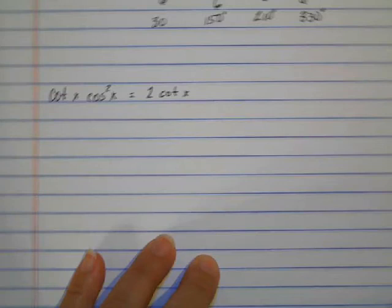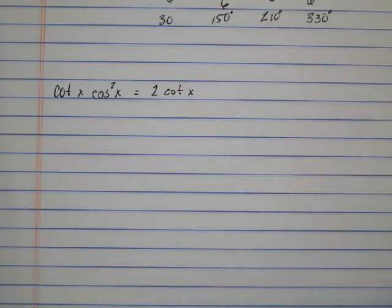So here's a new one. We've got cotangent of x times cosine squared of x equals 2 cotangent x.